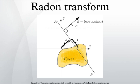The Radon transform is widely applicable to tomography, the creation of an image from the projection data associated with cross-sectional scans of an object. If a function represents an unknown density, then the Radon transform represents the projection data obtained as the output of a tomographic scan.